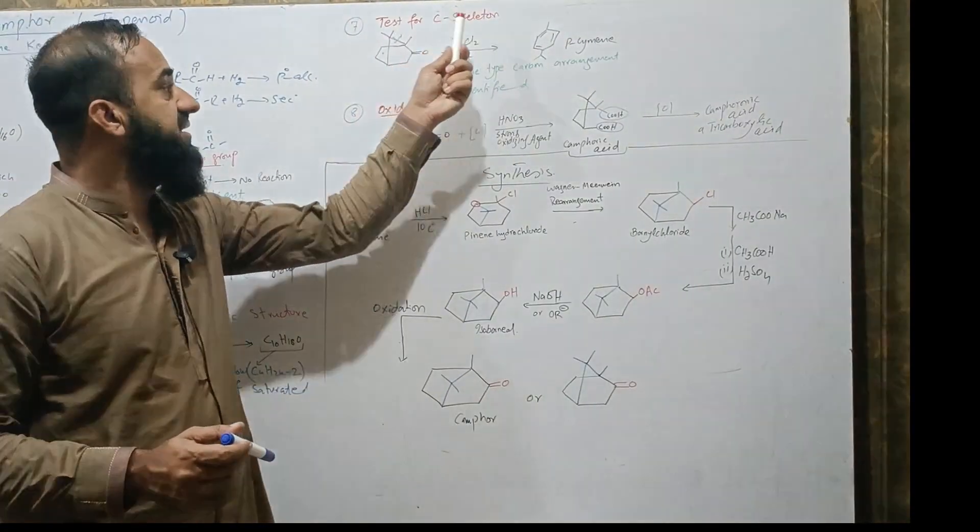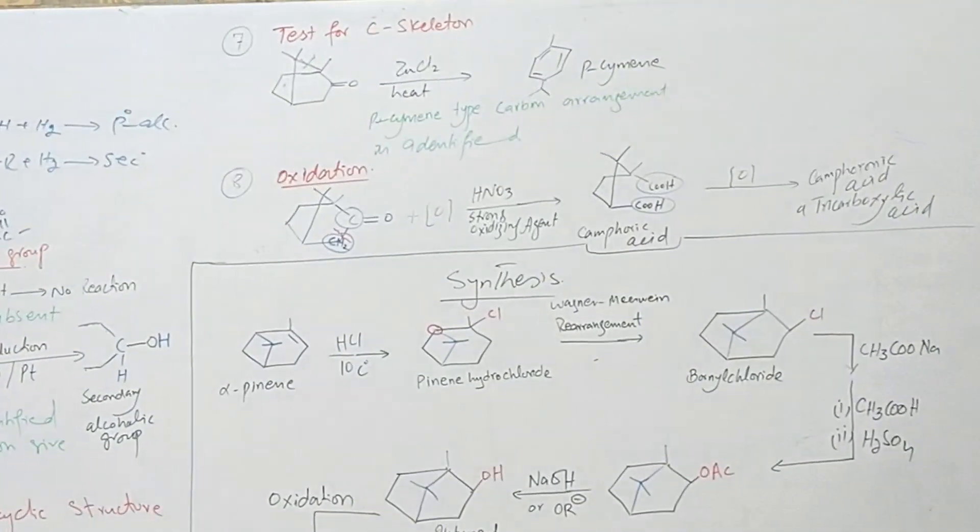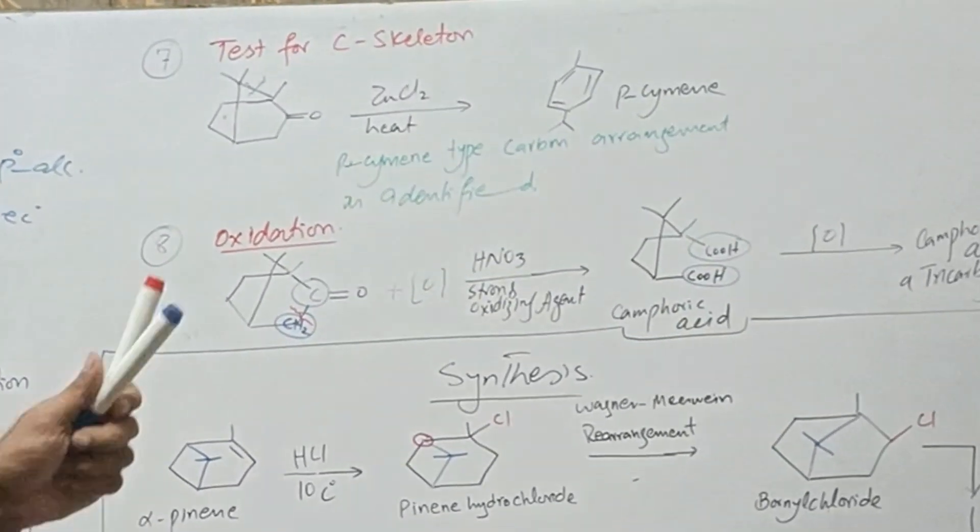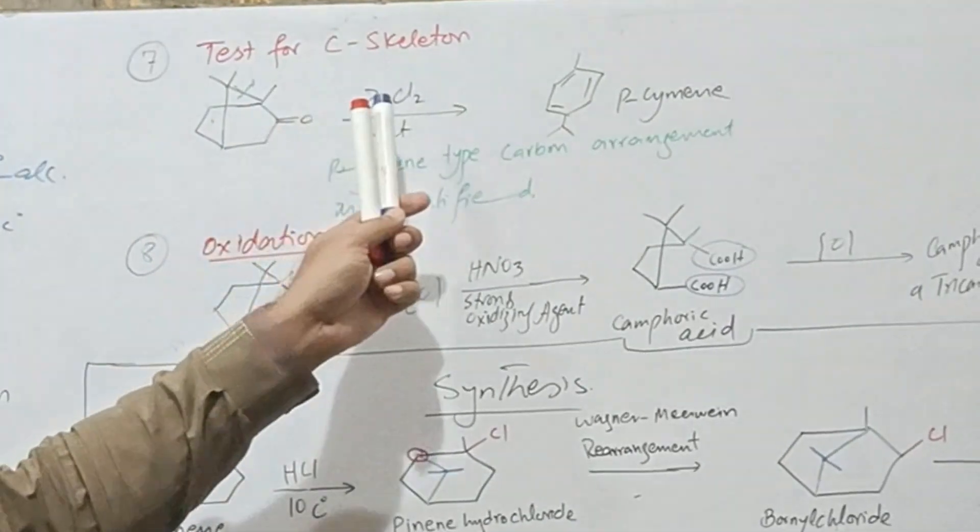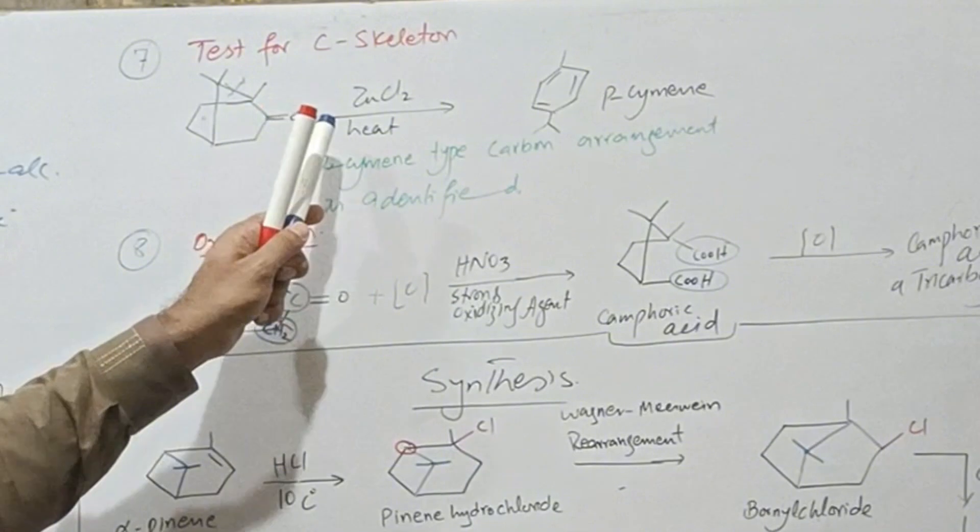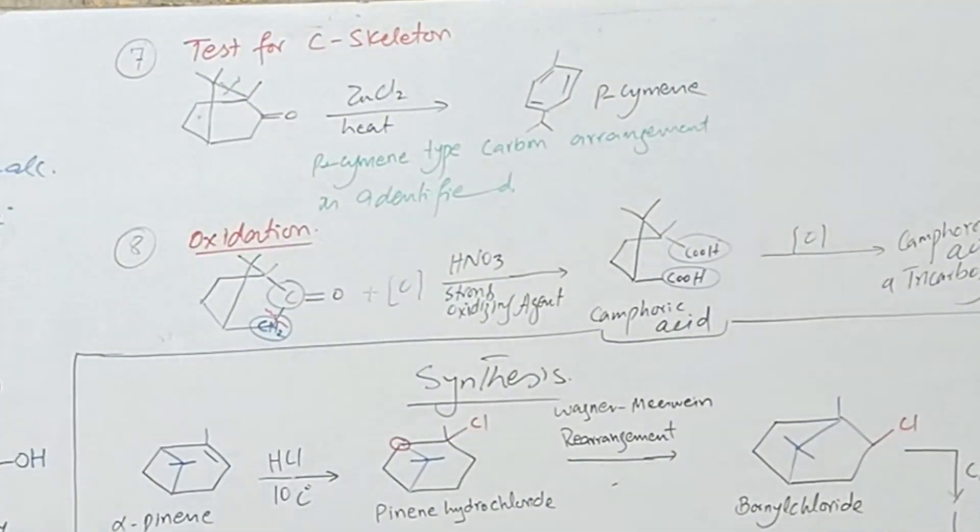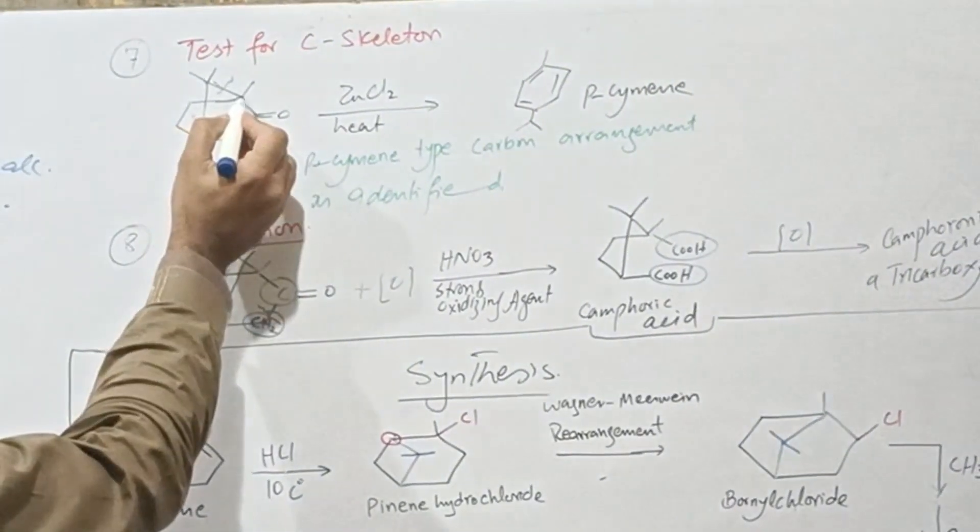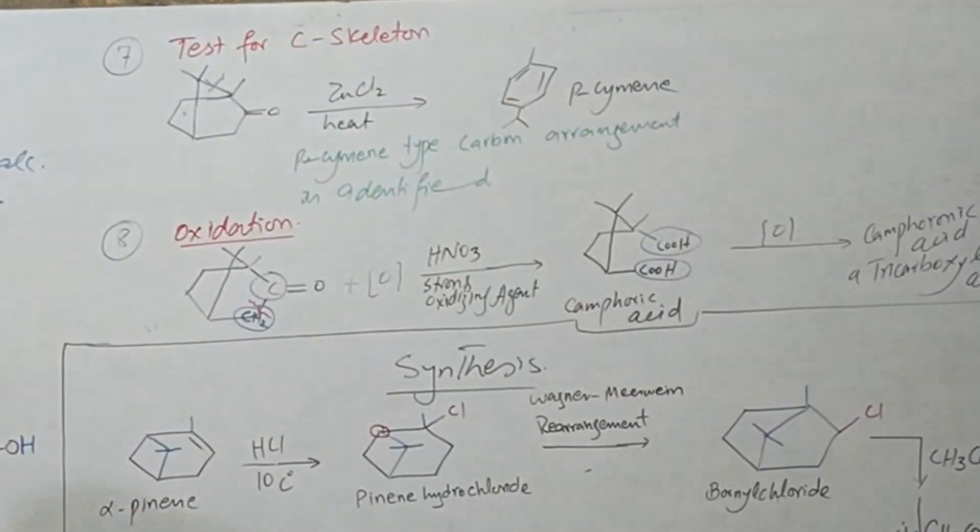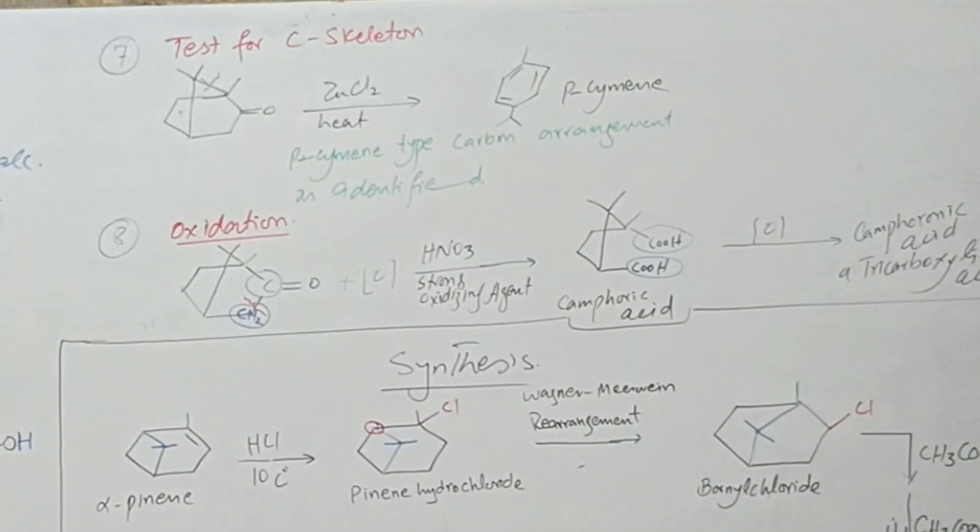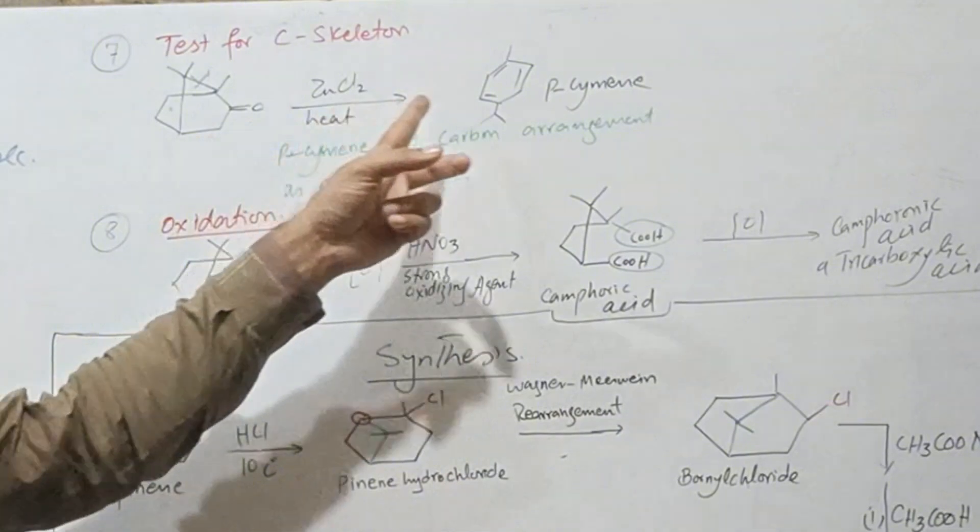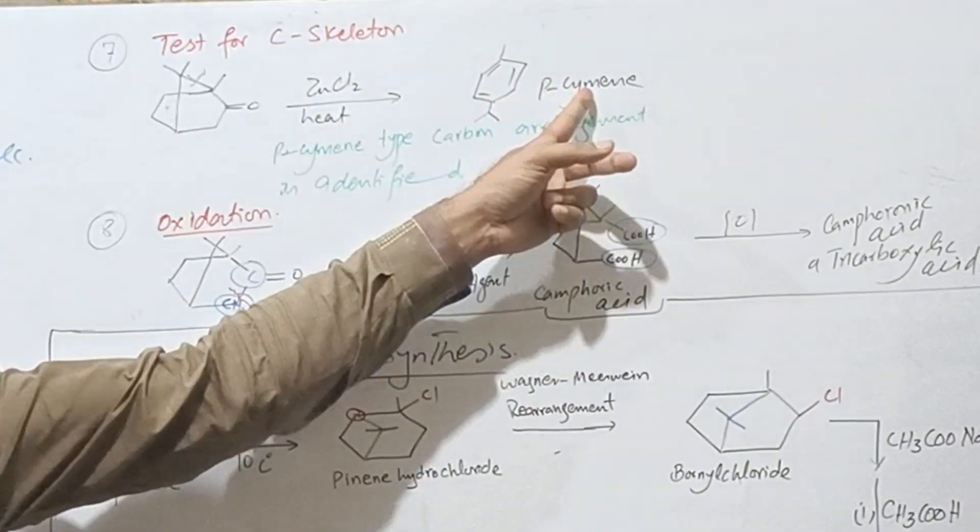If we see the arrangement of carbon atoms or carbon skeleton, how the carbon atoms are arranged in camphor? We treat camphor with zinc chloride and heat it. Dehydration and dehydrogenation takes place. The bond between these two carbons are broken and we get para-cymene, which indicates that carbon skeleton present in camphor is just like arrangement present in para-cymene.